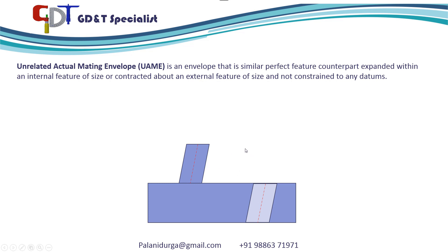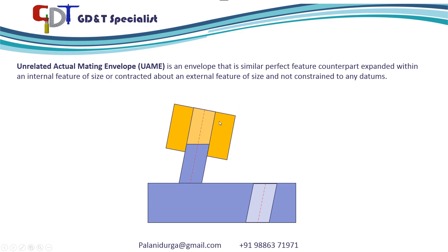To understand this, we take this example. In this part, you have a boss and a hole. To measure the axis of this boss, you use an envelope — this envelope will be inserted inside. So this is the actual mating envelope.